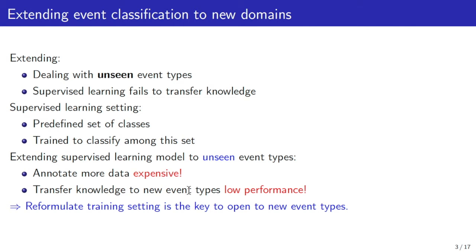Hence, under supervised learning, extending model to unseen event types is either very expensive because of the cost of annotations or usually resulting in low performance because of the low generalization ability of the learned model.